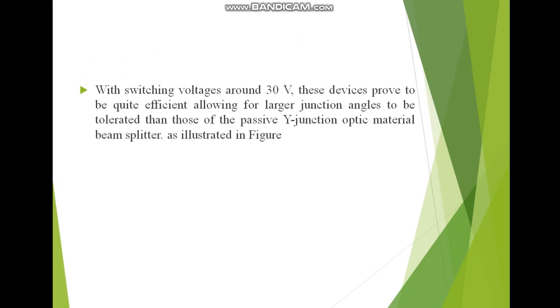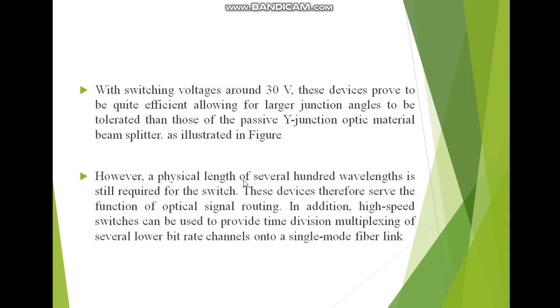With a switching voltage around 30V, these devices prove to be quite efficient, allowing for larger junction angles to be tolerated than those of the passive Y-junction beam splitter. However, a physical length of several hundred wavelengths is still required for the switch. These devices serve the function of optical signal routing. In addition, high-speed switches can be used to provide time-division multiplexing of several lower-bit channels onto a single-mode fiber link.